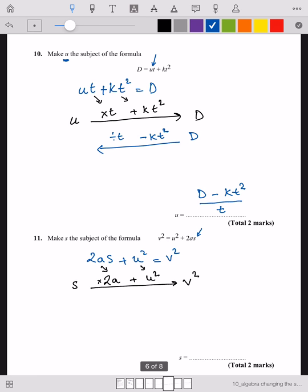So when we do inverse, we do the opposite. Take away u square and divide by 2a. So my answer now is v square minus u square divided by 2a.